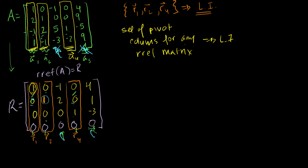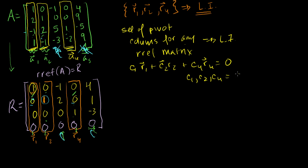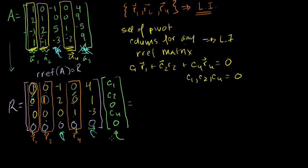So the set of pivot columns for any reduced row echelon form matrix is linearly independent. That means the solution to c1 times r1 plus c2 times r2 plus c4 times r4 equals zero has only one solution: c1, c2, and c4 all equal zero. Another way to say it: if we write R times some vector x, where x is written as (c1, c2, 0, c4, 0), that equals zero — this is a particular member of the null space.